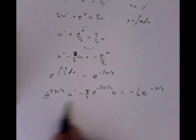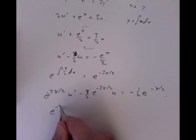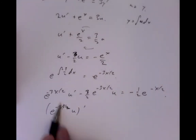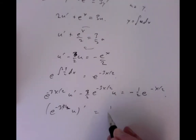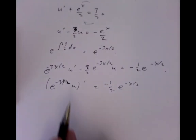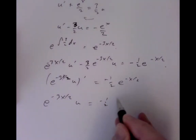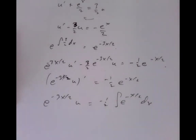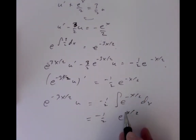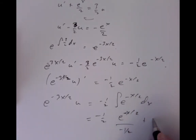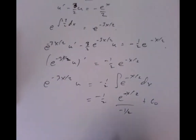We can see that this looks like a product rule computation: the derivative of e to the minus 3x over 2 times u equals minus one-half e to the minus x over 2. So we can now integrate both sides: e to the minus 3x over 2 times u equals minus one-half times the integral of e to the minus x over 2 dx. That should be minus one-half times the exponential divided by its rate, giving us e to the minus x over 2 plus a constant.